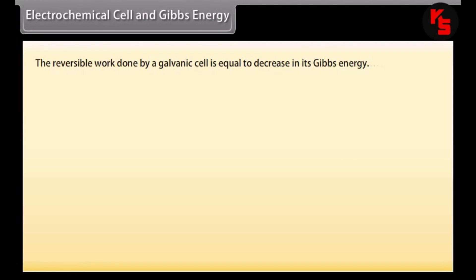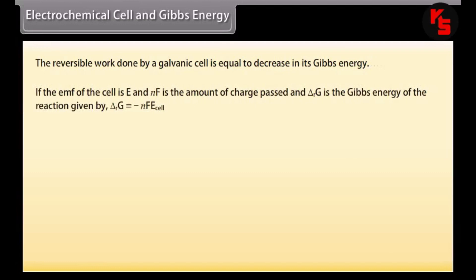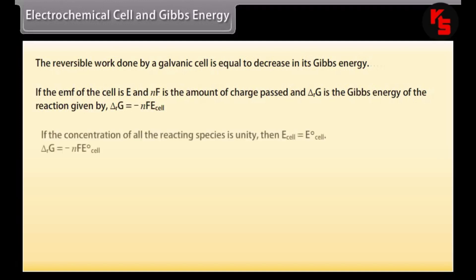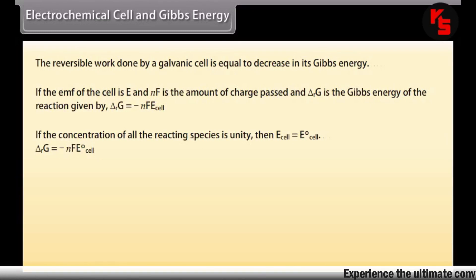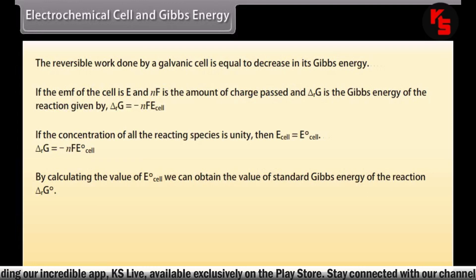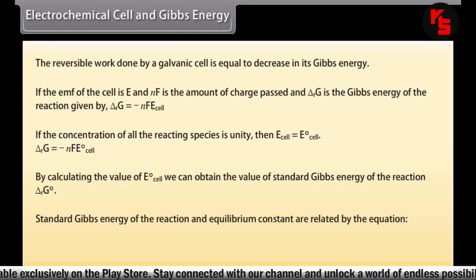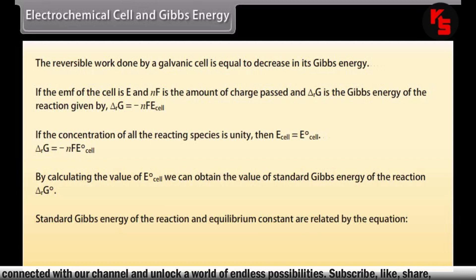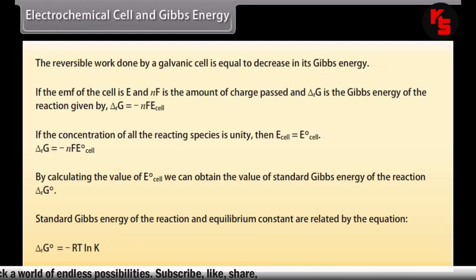Electrochemical cell and Gibbs energy. The reversible work done by a galvanic cell is equal to the decrease in its Gibbs energy. If the EMF of the cell is E, and nF is the amount of charge passed, then the Gibbs energy of the reaction is given by: ΔrG = −nFE_cell. If the concentration of all reacting species is unity, then E_cell = E°_cell, so: ΔrG = −nFE°_cell. By calculating E°_cell, we can obtain the standard Gibbs energy ΔrG°. Standard Gibbs energy and equilibrium constant are related by: ΔrG° = −RT ln K.